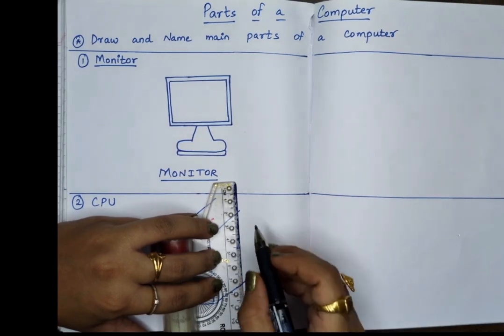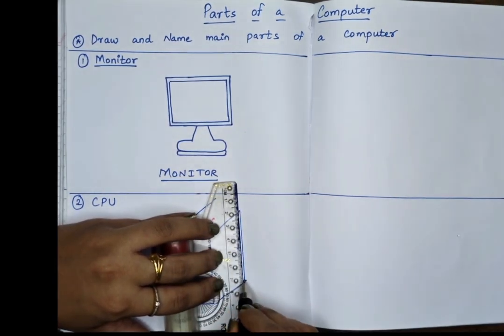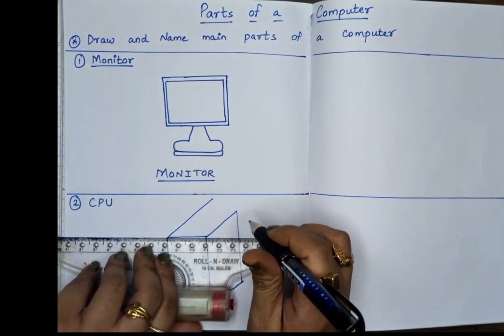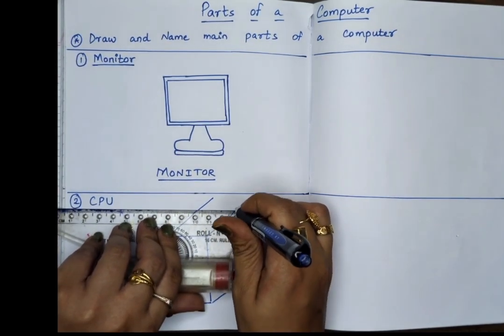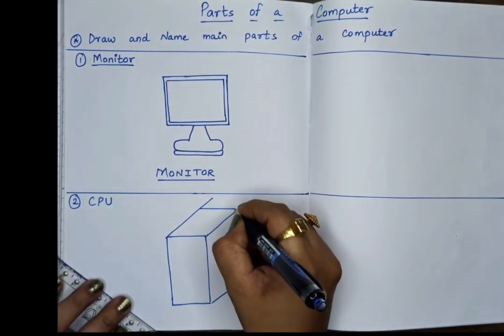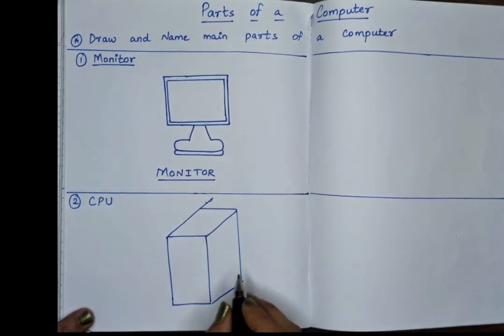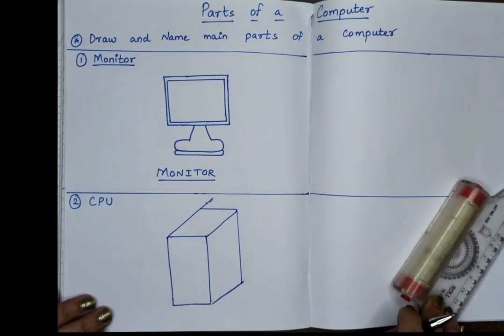It is fixed inside the CPU cabinet and follows all the instructions we give. This is the CPU big and smart. It's the brain, the thinking part.